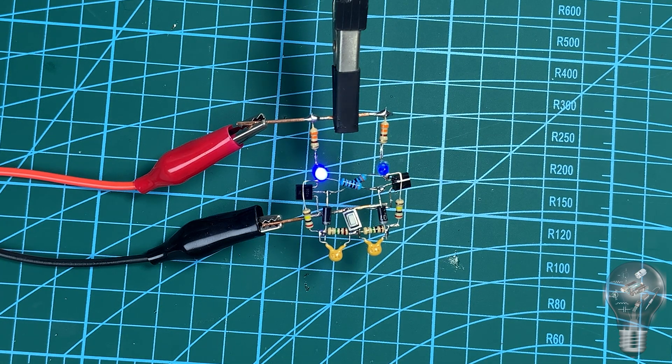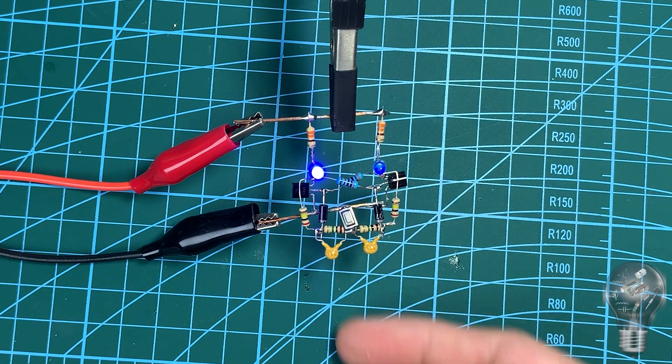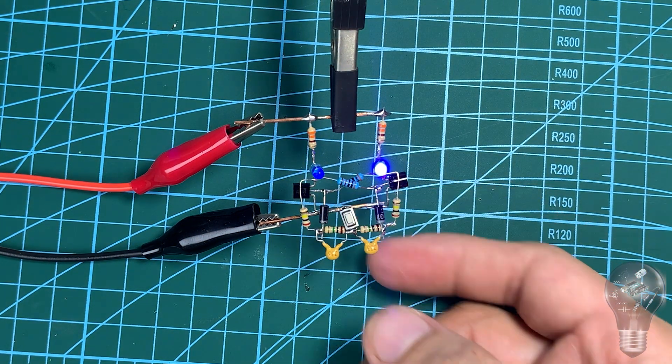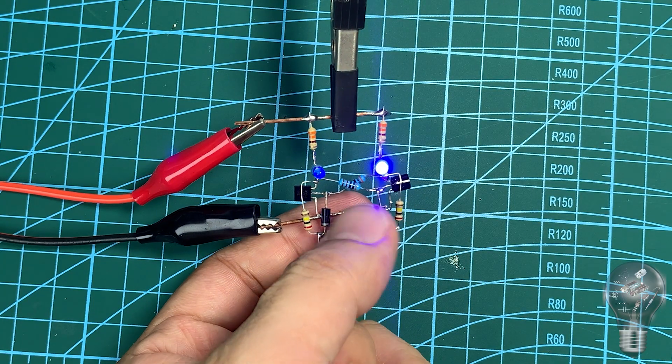This one-button flip-flop circuit can be applied in electronic switches, power buttons of devices, or simple control systems. I hope that through this video you have clearly understood the principle and can build the circuit yourself.